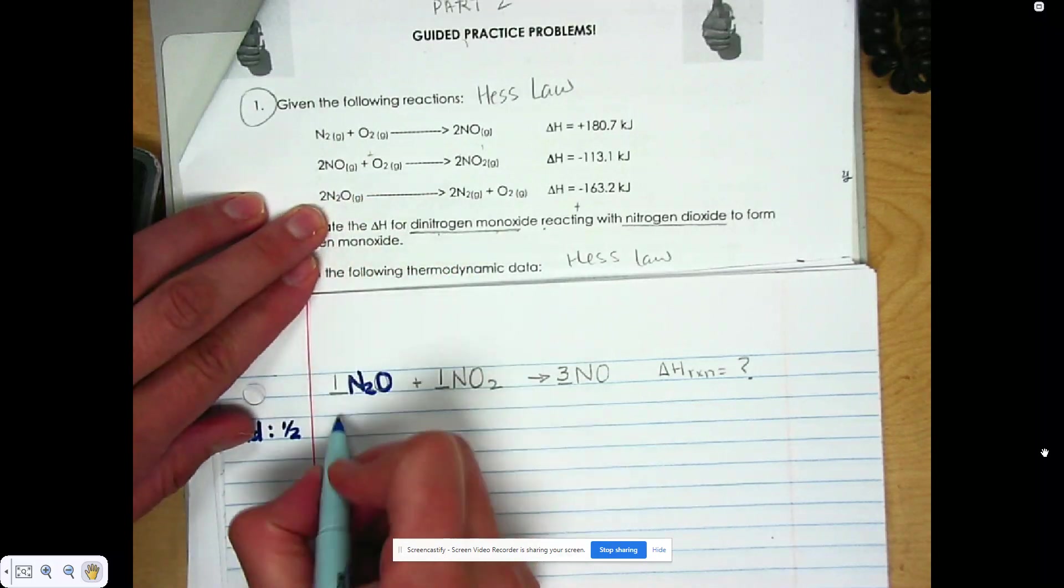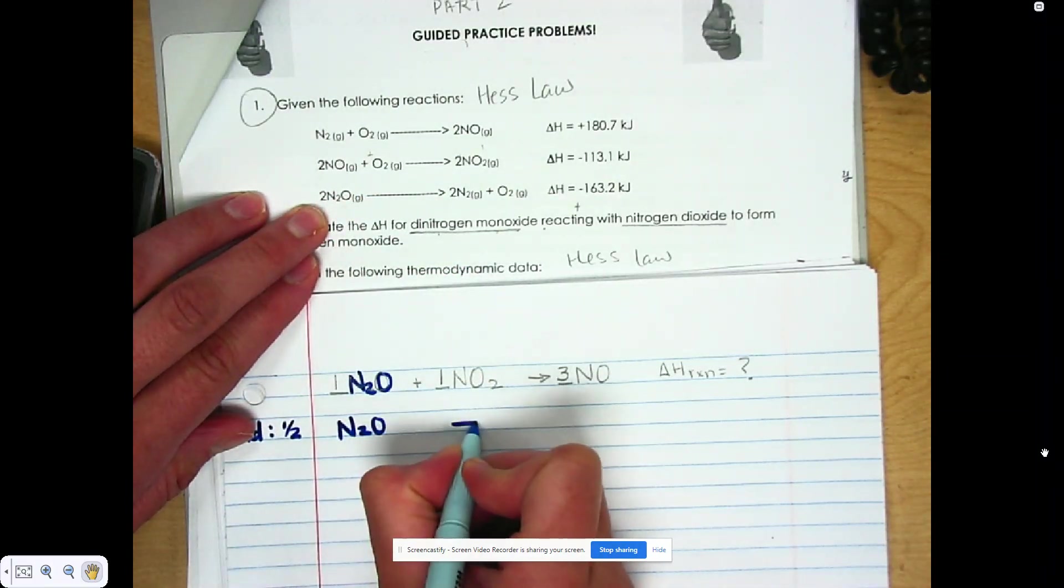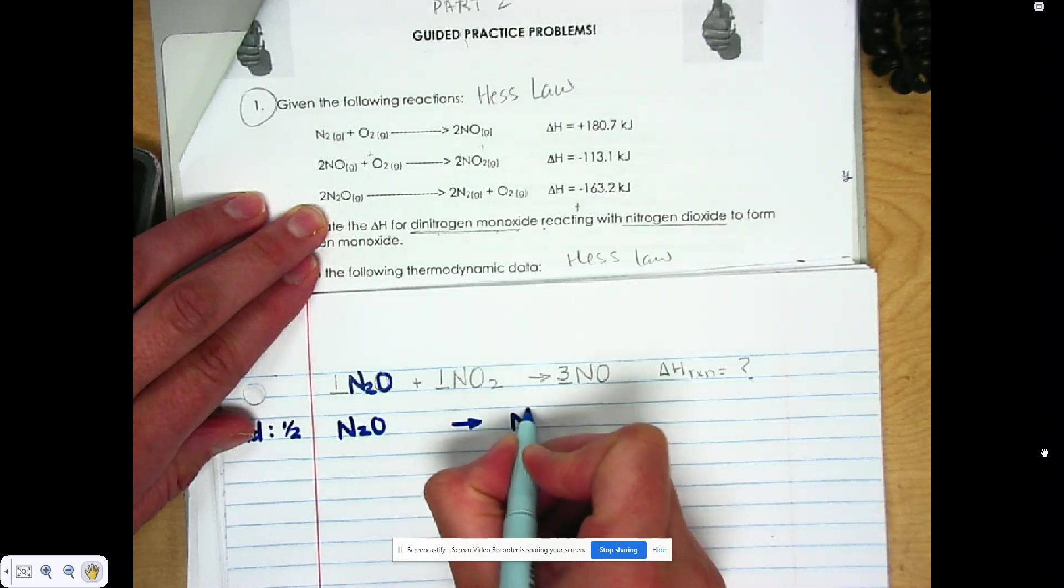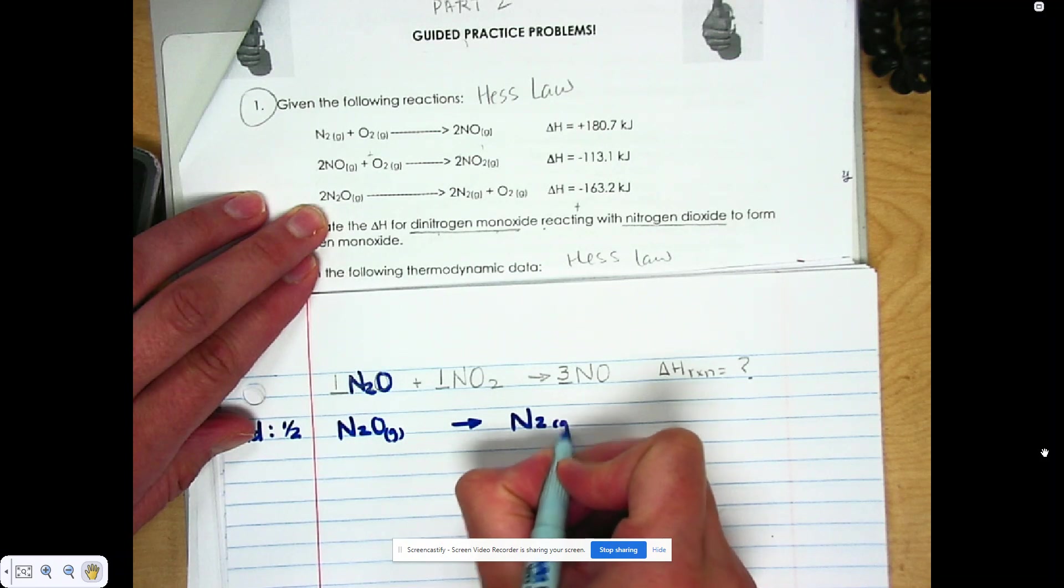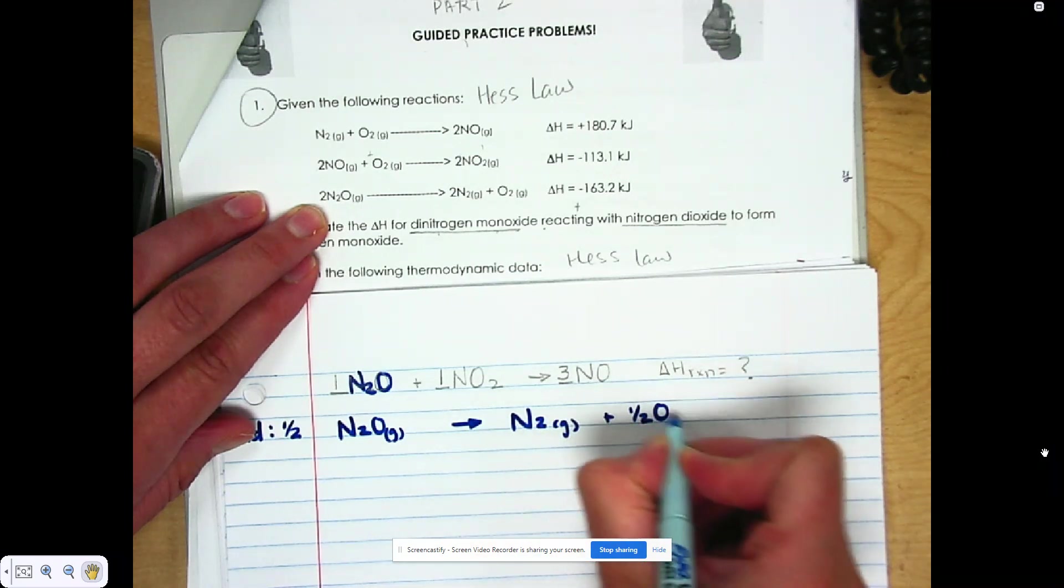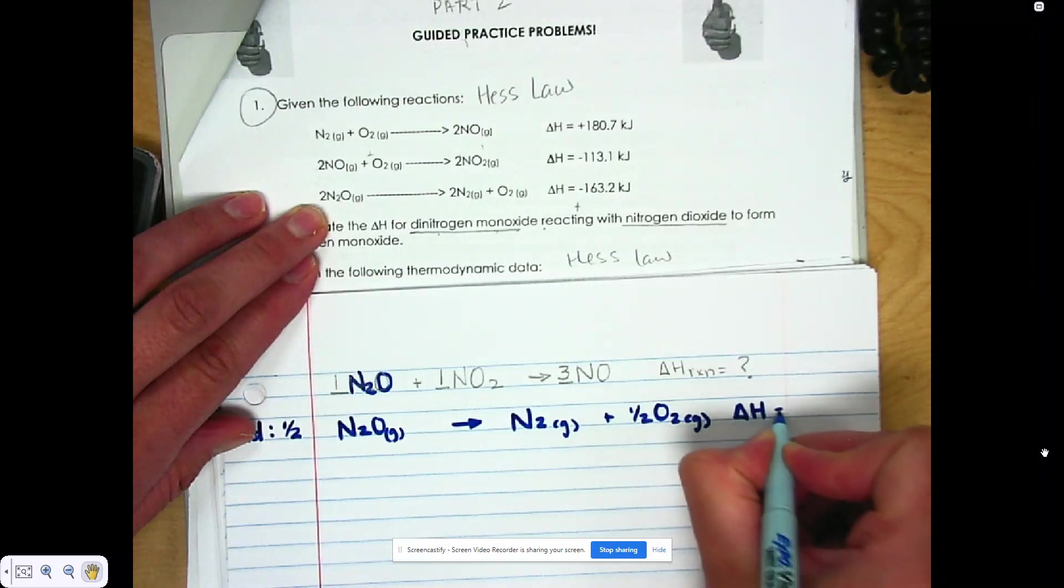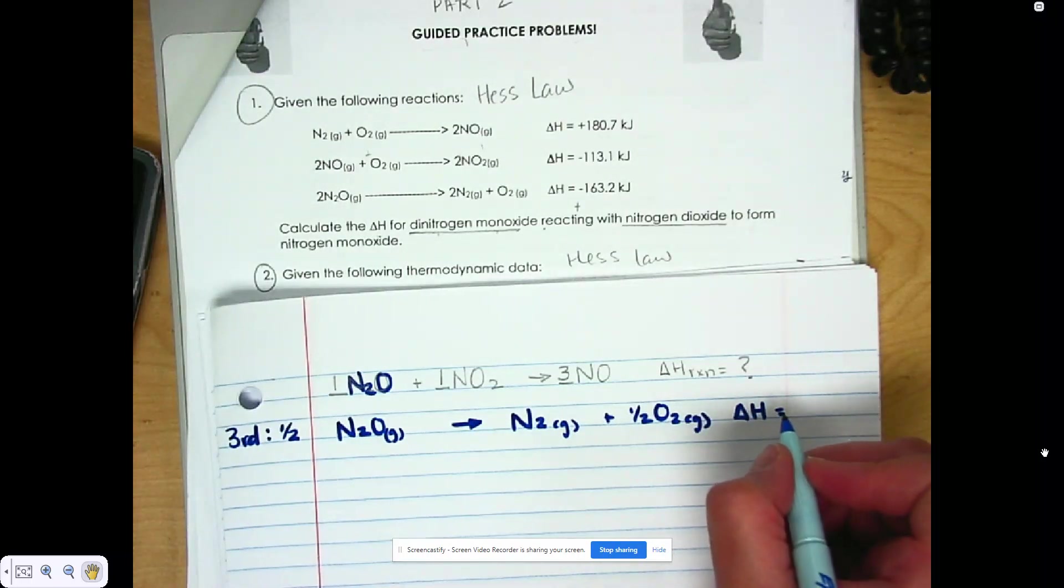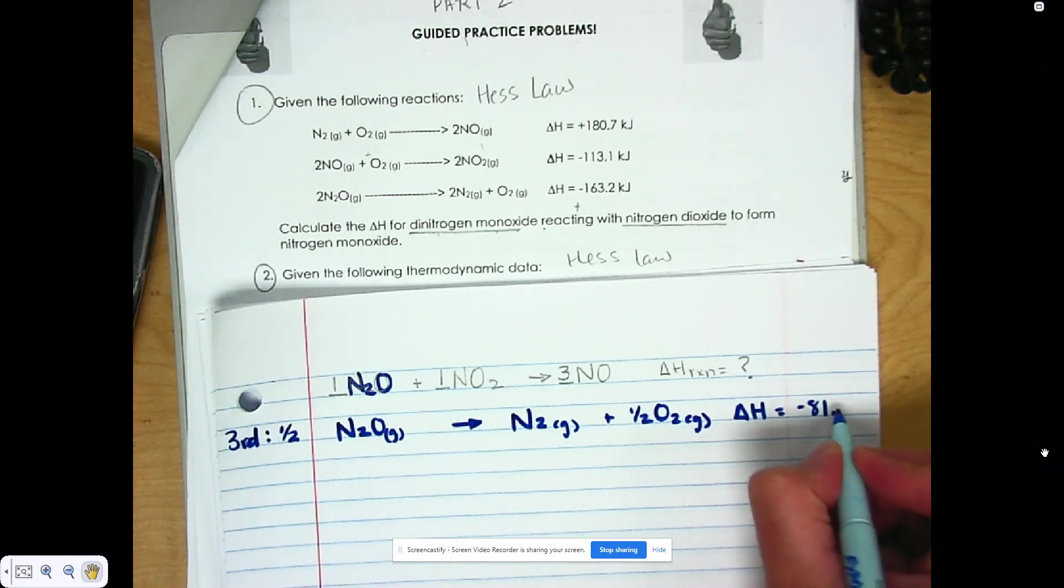So that's going to give me N2O, N2, and this is all in gaseous state, plus one half of O2 gas. And my delta H value is going to be half of 163, and half of 163 is negative 81.6 kilojoules.